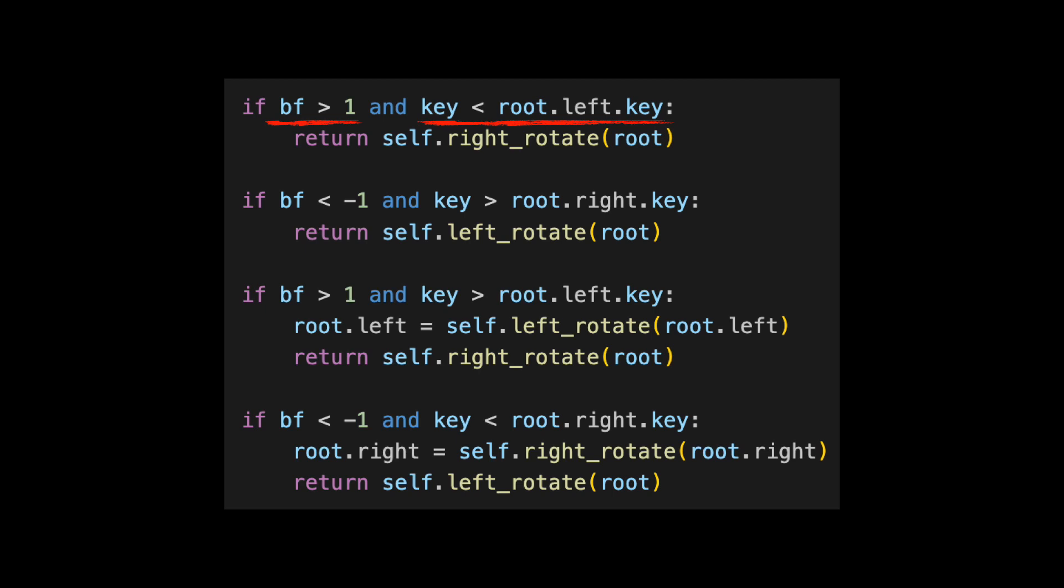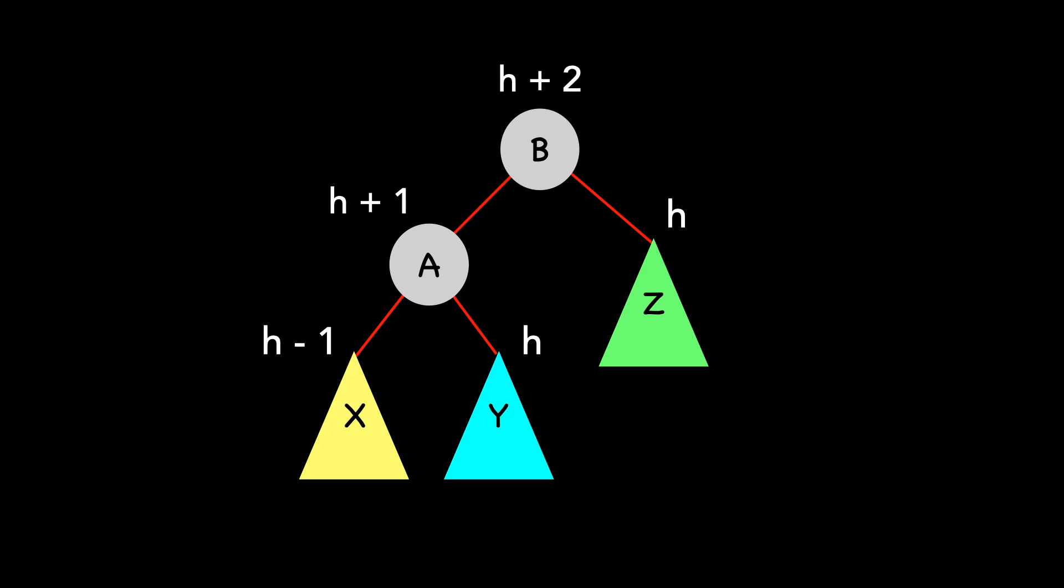Let's take a look at rotations in action, starting with this valid AVL tree. We know it's a valid AVL tree because the heights of A's left and right children differ by one. Likewise for the children of B. Let's say we want to insert a new node and based on its key, it belongs in subtree X. We add the node to X and its height increases by one. We got lucky because this is still a valid AVL tree.